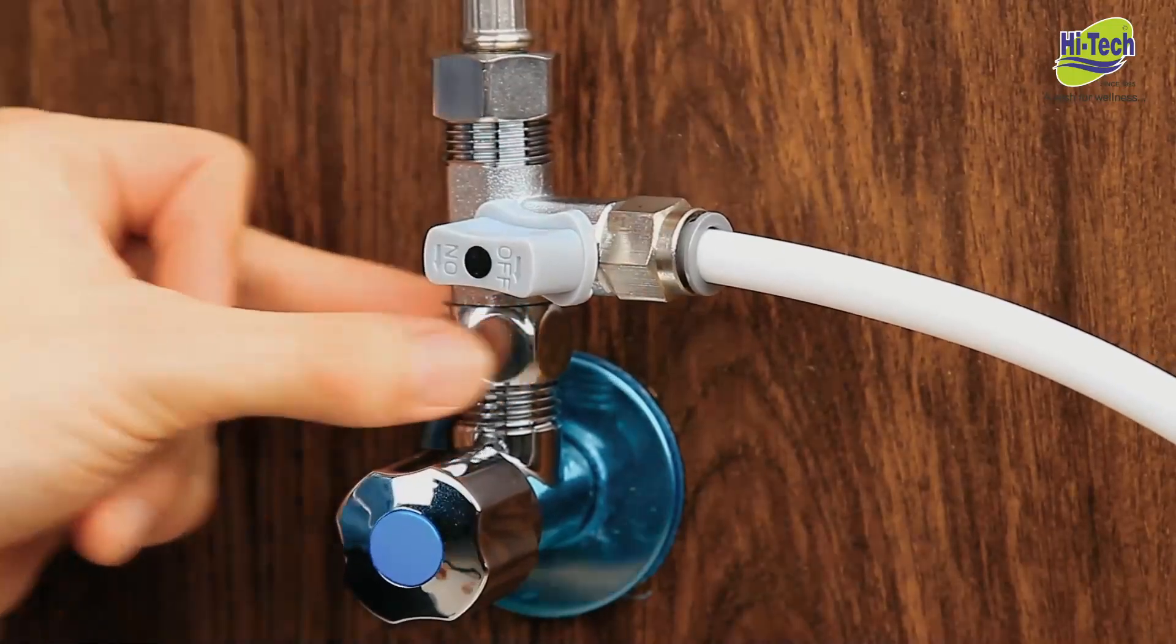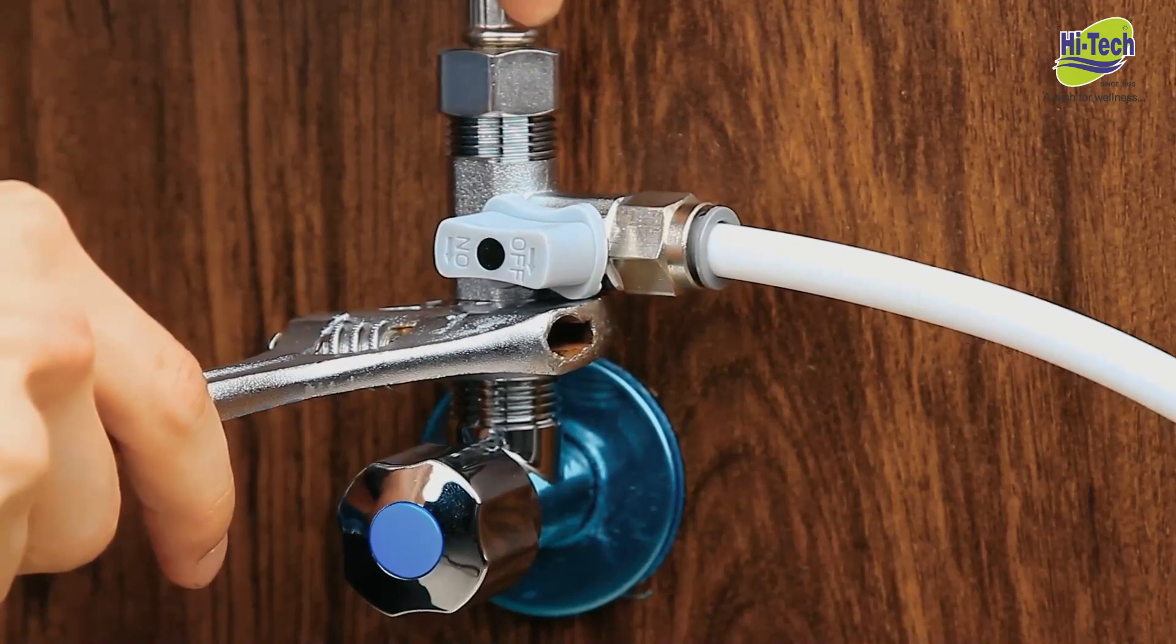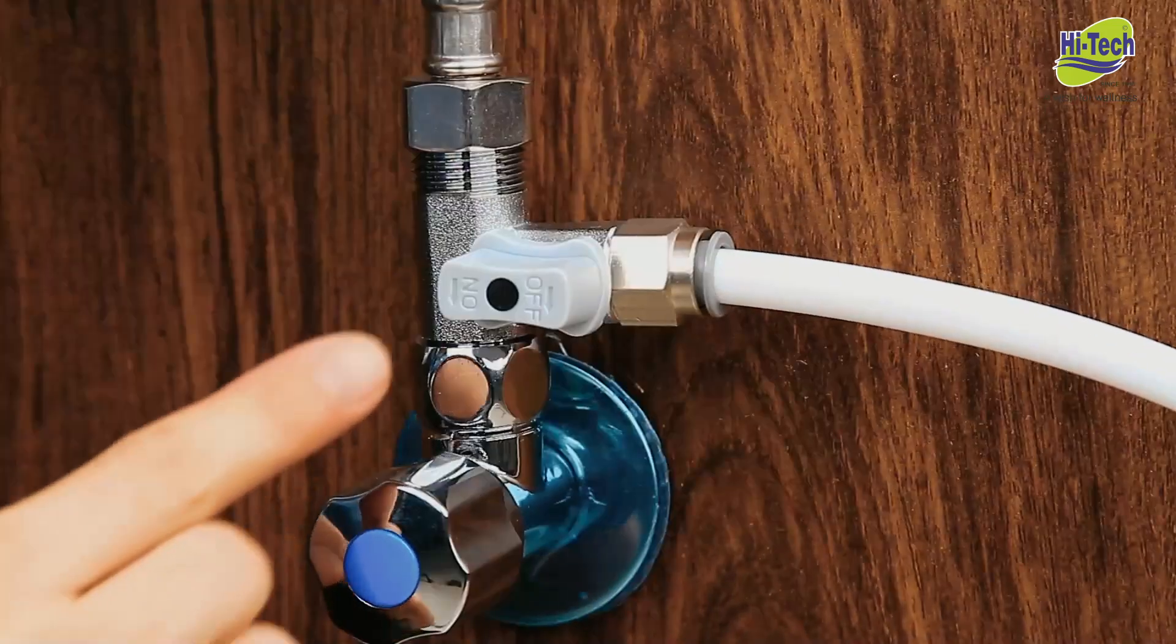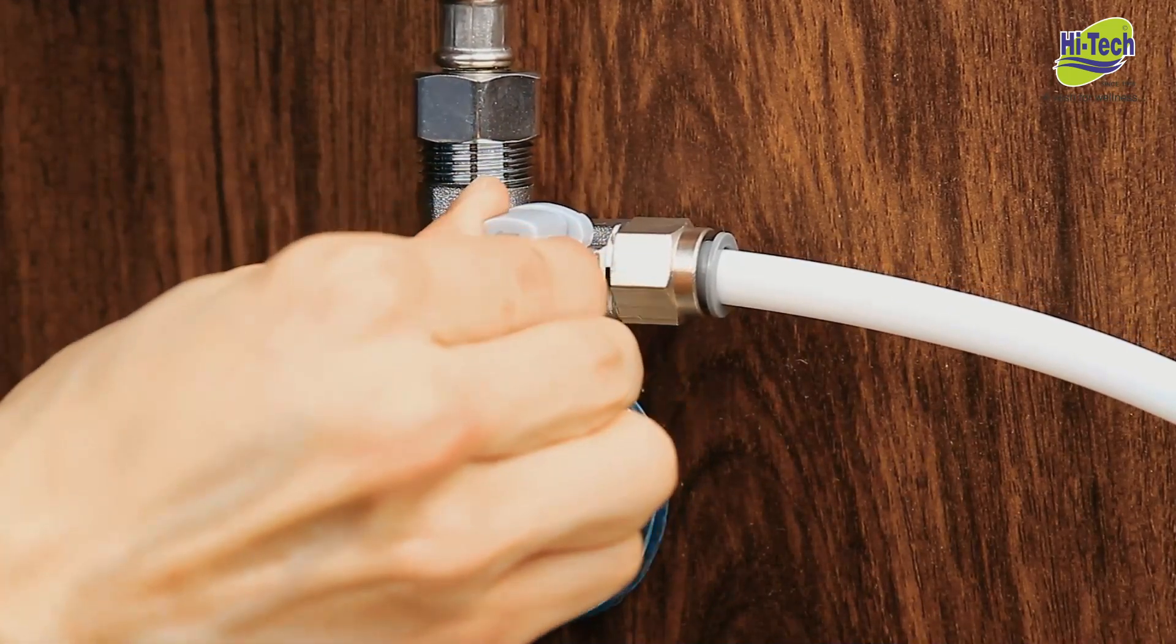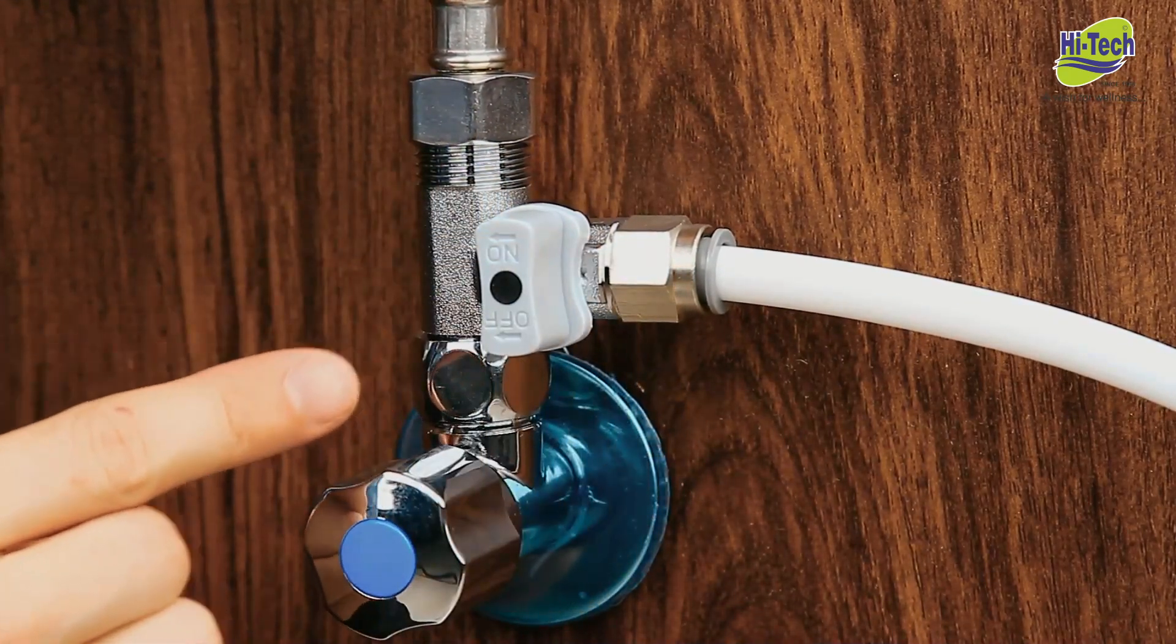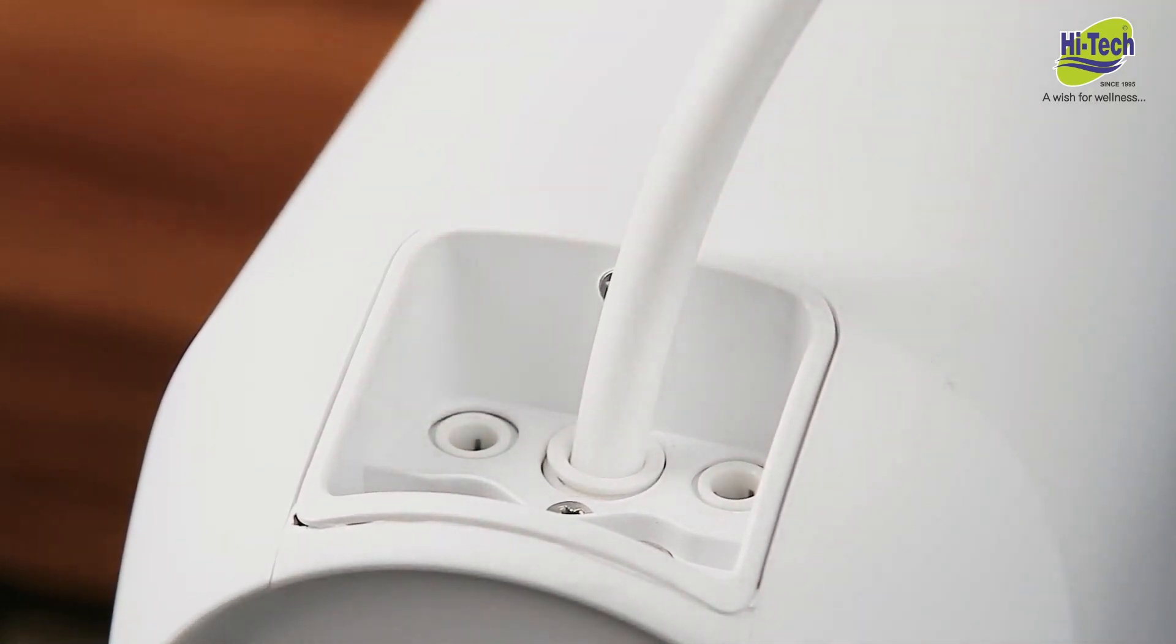Connect the water supply valve to the RO water adapter. Place the washer in between and tighten up with the adjustable wrench. Keep the RO feed water adapter in the close position until installation is finished. Then connect the other end of the tube to the feed water port on the system.